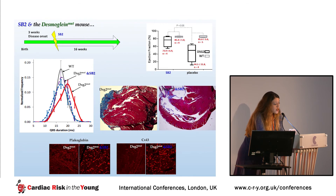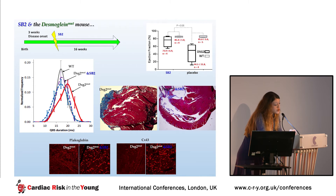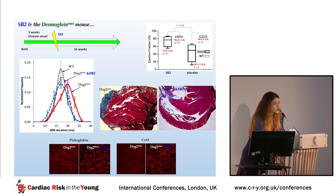We started much earlier, at three weeks of age, injecting this mouse every day with SB2 over 13 weeks. Echocardiography showed a dramatic restoration of ejection fraction, going back up to 74% as opposed to 45% in animals that did not take the drug. The animals had no arrhythmias, QRS duration was normalized, there was no fibrotic replacement of the heart, and plakoglobin and connexin-43 were again localized where they should be.